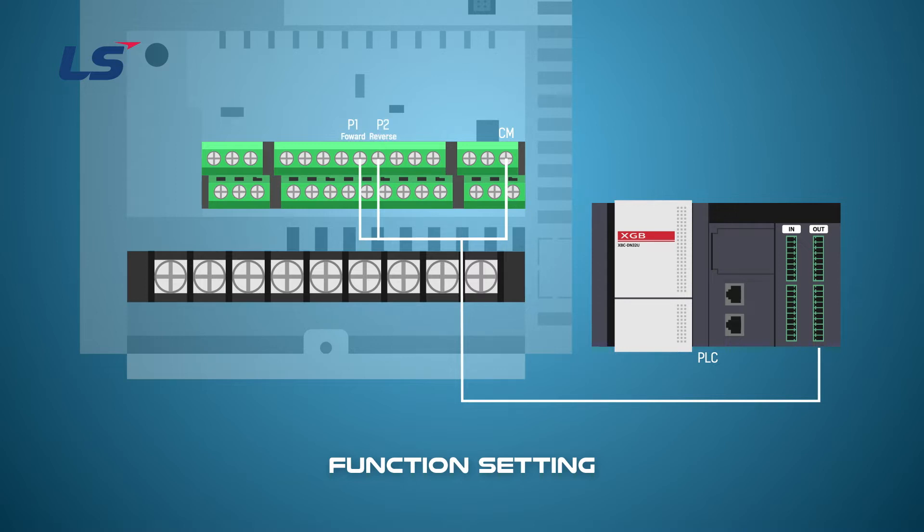Multi-step speed will be connected to P5 and P6. When the P5 terminal is activated, it becomes multi-step first stage. And when the P6 terminal operates, it becomes multi-step speed second step.